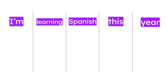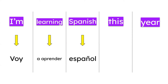Let's translate the sentence. The future form goes: voy — yo voy — yo voy a aprender — yo voy a aprender español este año. 'This year' in Spanish is este año.